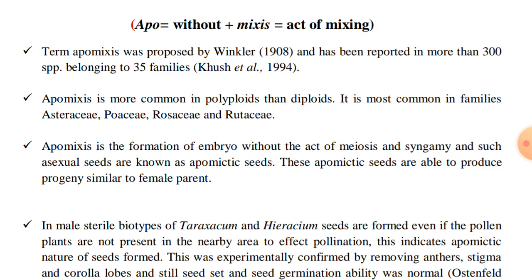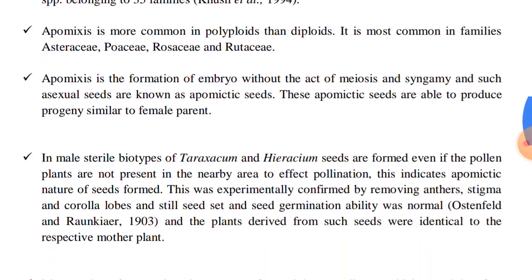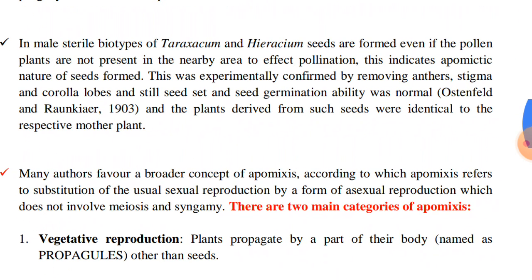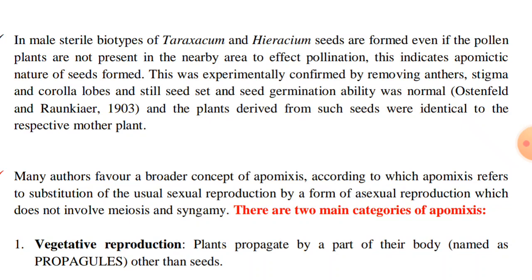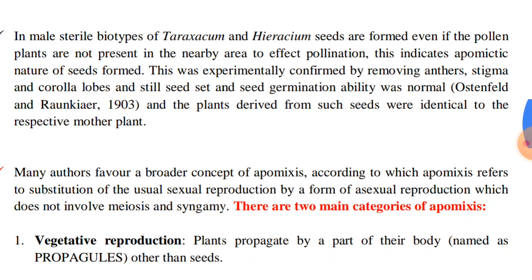Apomyxis is the formation of embryo without the act of meiosis and syngamia, and such asexual seeds are known as apomyctic seeds. These apomyctic seeds are able to produce progeny similar to the female parent as they are genetically similar to the female parent. In male sterile biotypes of Taraxacum and Hieracium, seeds are formed even if the pollen plants are not present in the nearby area to effect pollination. This indicates the apomyctic nature of the seeds formed.